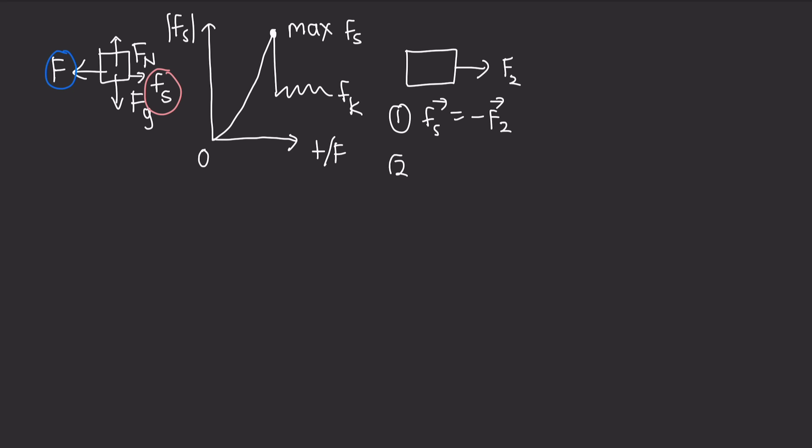The second property is that the magnitude of this static frictional force has a maximum value, fs,max, that is given by μs times fn, where fn is the normal force. This is the maximum value of the static frictional force, and μs here is the coefficient of static friction. And if the magnitude of the component of f2 exceeds fs,max, then the body will begin to slide along the surface in the direction of f2.